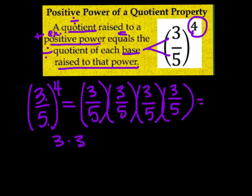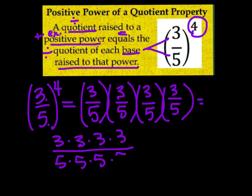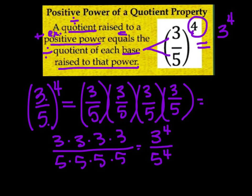Or, 3 times 3 times 3 times 3 — four times — over 5 times 5 times 5 — four times. So we have a bunch of 5s and a bunch of 3s. That can be rewritten as 3 to the fourth over 5 to the fourth. So 3 fifths to the fourth power equals 3 to the power of 4 over 5 to the power of 4.